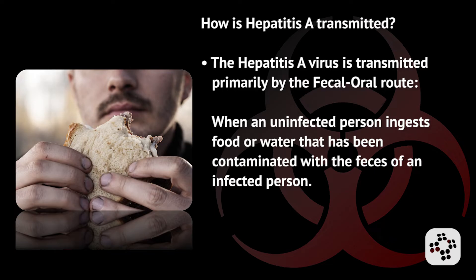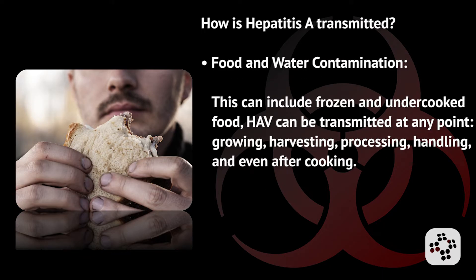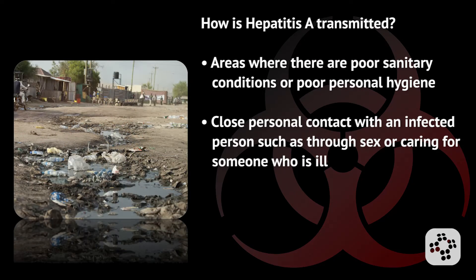Hepatitis A can be transmitted primarily by the fecal-oral route when an uninfected person ingests food or water that's been contaminated with the feces of an infected person. Food and water contamination can include even frozen and undercooked food. Hepatitis A virus can be transmitted at any point during growing, harvesting, processing, handling, and even after cooking foodstuff. Areas with poor sanitary conditions or poor personal hygiene are also risks, as is close personal contact with an infected person, such as through sex or caring for someone who is ill.